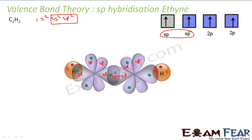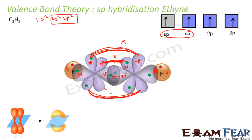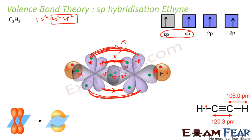The remaining 2p orbitals on each carbon now form pi bonds. One pair of 2p orbitals forms one pi bond, and the other pair of 2p orbitals forms another pi bond — so there are two pi bonds in total. In ethyne, the triple bond consists of one sigma bond and two pi bonds.